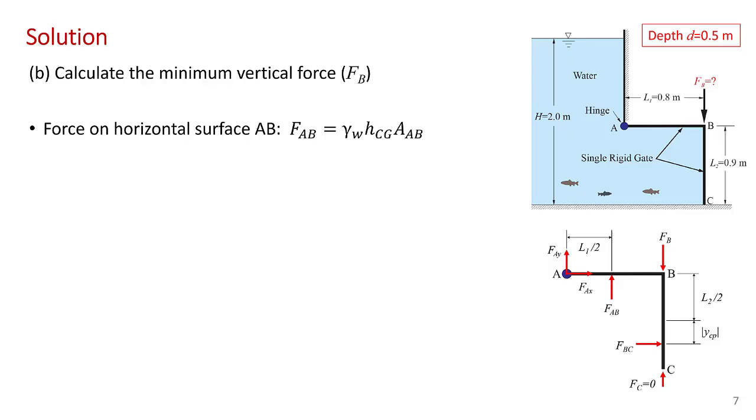So now for part B, to find the force at B, all we need to do is calculate and locate the hydrostatic forces for our free body diagram. Starting with the horizontal surface AB here, the vertical pressure force on this surface is the specific weight of water, the depth of the centroid of that surface, which is constant for the entire surface. The depth of the centroid is just the depth of the surface, times the surface area of AB.